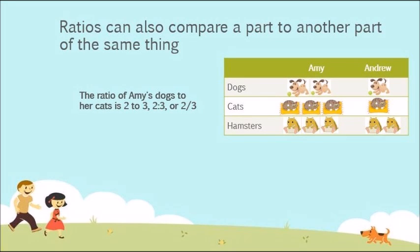Ratios can also compare a part to another part of the same thing. In this example, we're going to use Amy's dogs to cats. The ratio of Amy's dogs to her cats is 2 to 3, 2:3, or 2/3.